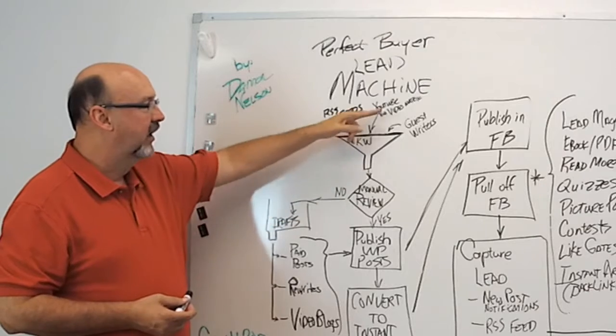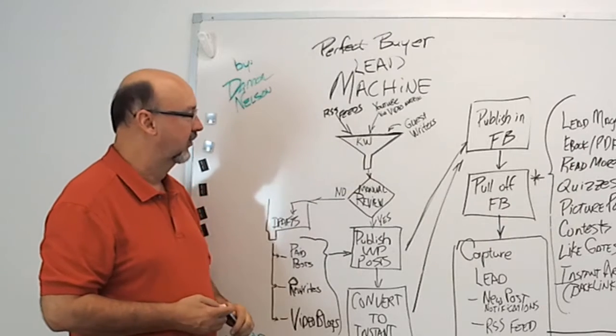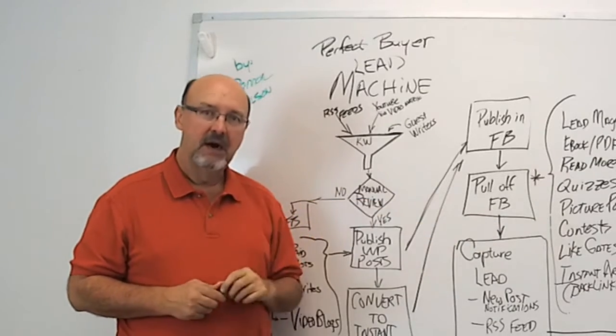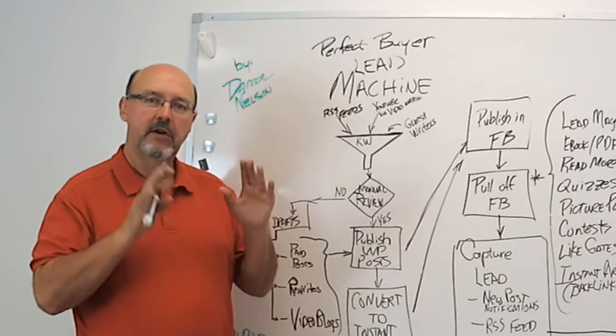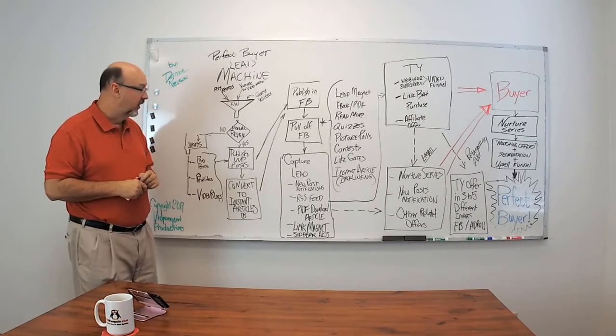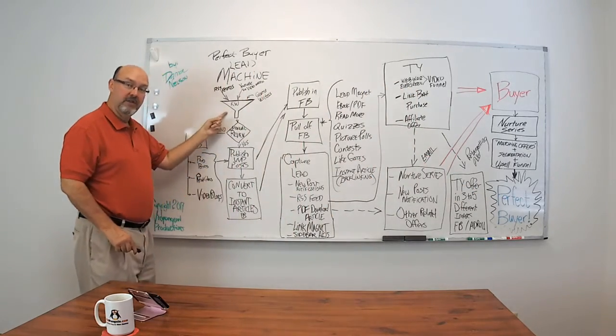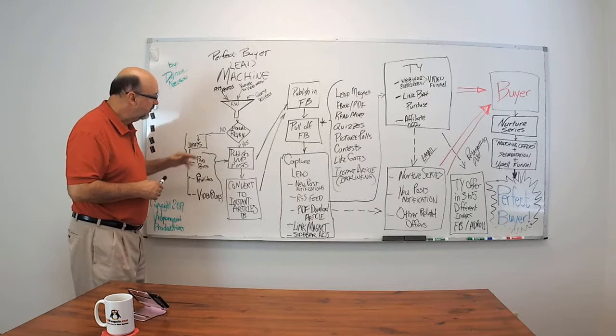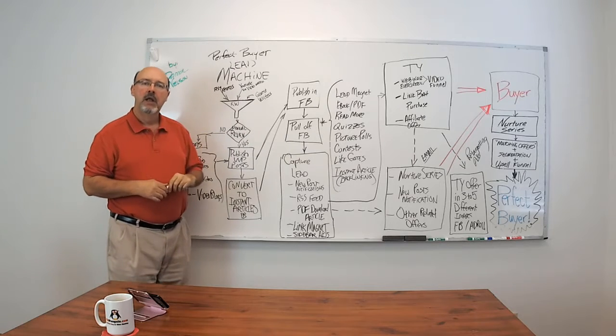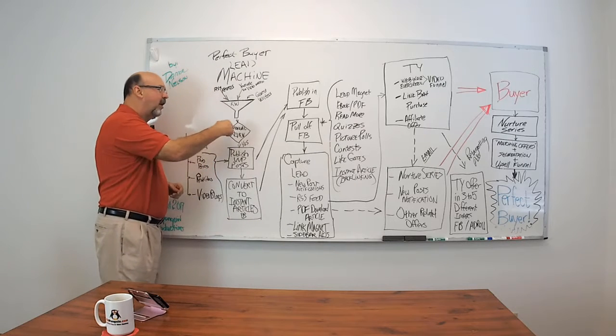I'm going to be sending RSS feeds. I'm going to be sending YouTube videos. I'm going to have guest writers all putting into my keyword filtering system. And with keyword filtering, the reason I keep that important is the perfect buyer is looking for certain things. He's looking for certain keywords and certain answers to problems addressing certain keywords. So I want to make sure his keywords are what I start the whole process with up here. So I'm going to do a keyword review, and right now I'm going to manually review this whole process before I turn in on automation. But this is semi-automated right here.